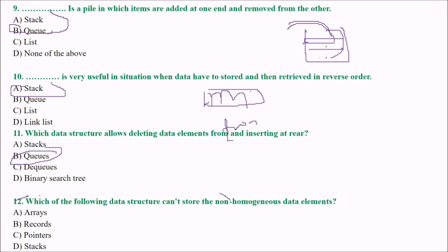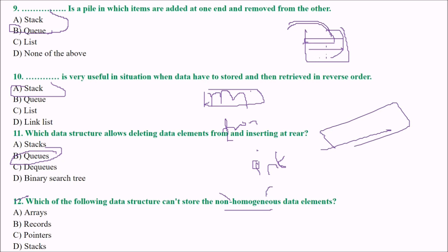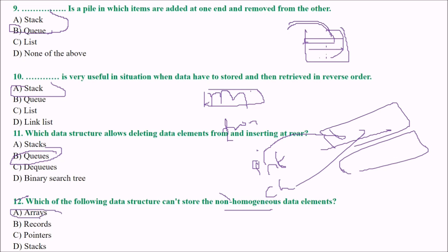Next: which of the following data structures cannot store non-homogeneous data elements? Non-homogeneous means mixing different types, like integers and characters together. The answer is arrays — arrays can only hold homogeneous data. The answer is A.